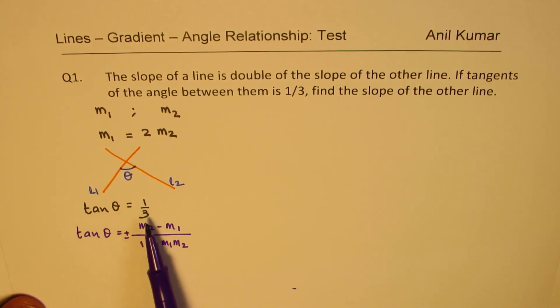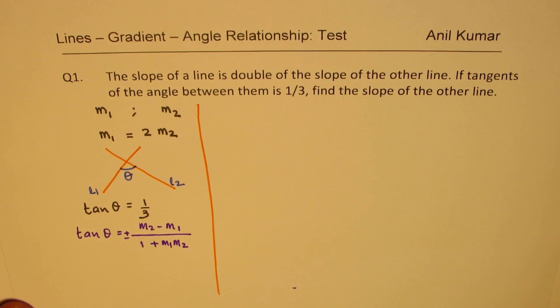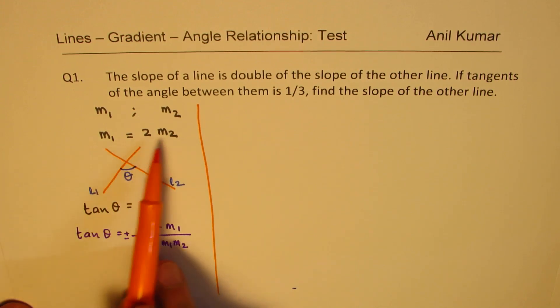So, tan theta is given to us as 1 by 3. We know the formula. The only unknown is the slope. We know one slope in terms of the other, so we can easily find it out. Perfect.